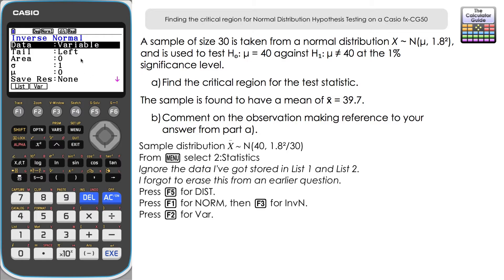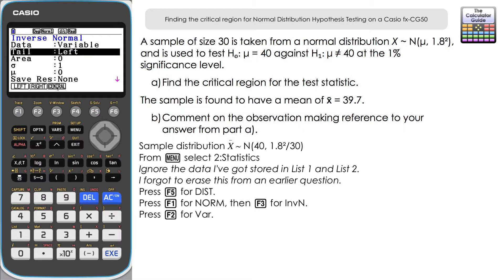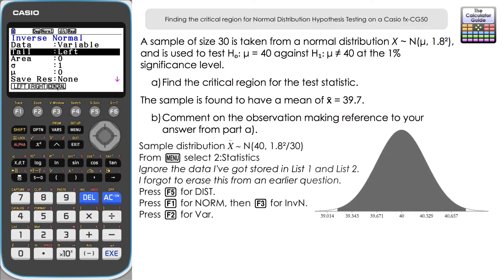For the tail setting, the alternative hypothesis H₁: μ ≠ 40 is a two-tailed test — suggesting μ could be higher or lower than 40. At the 1% significance level, we share 1% between both tails: 0.5% in each tail, with 99% in the central region. Navigate to tail and press F3 to focus on the central region.